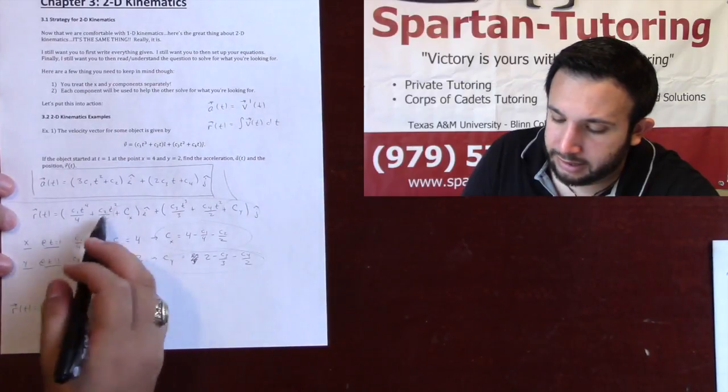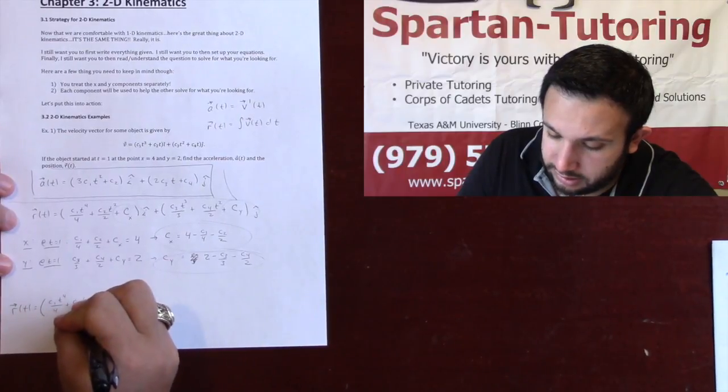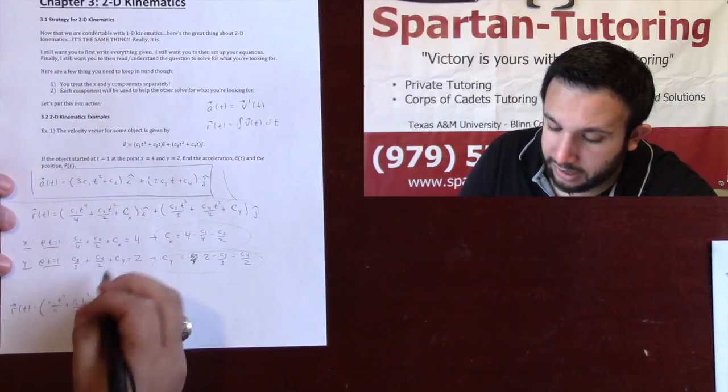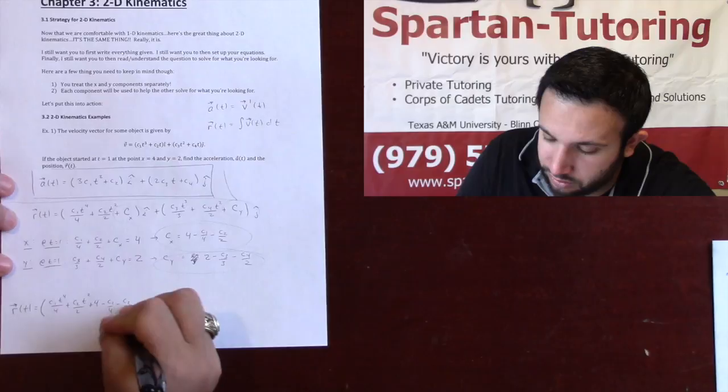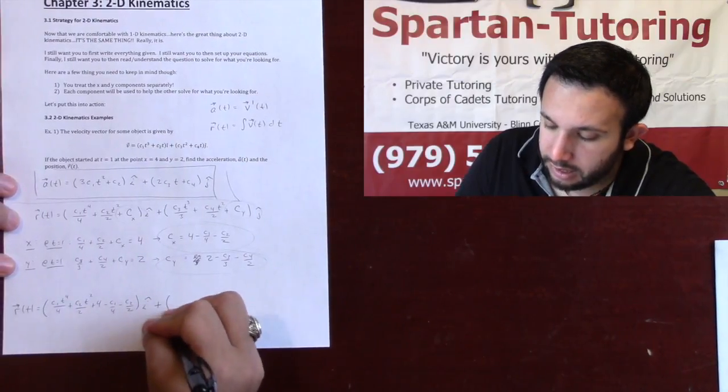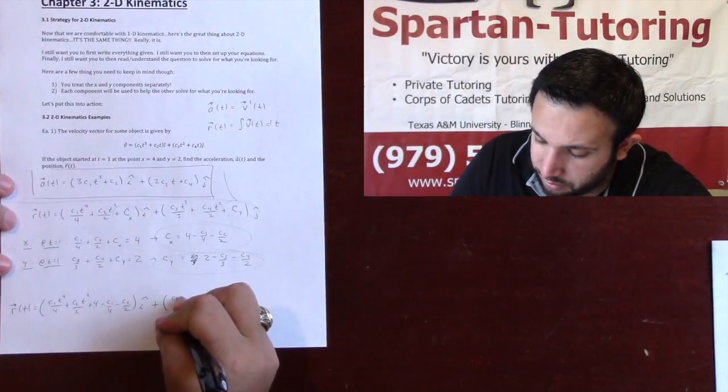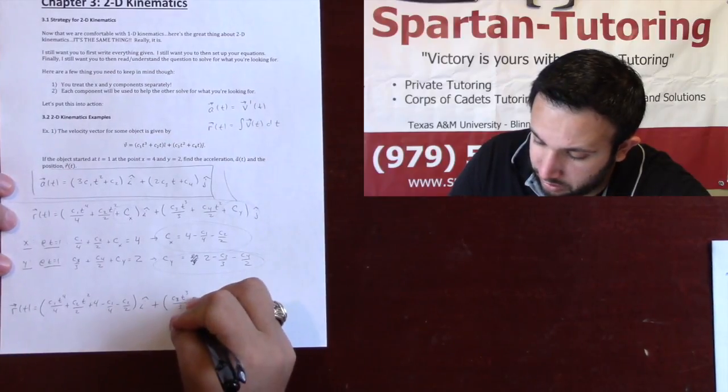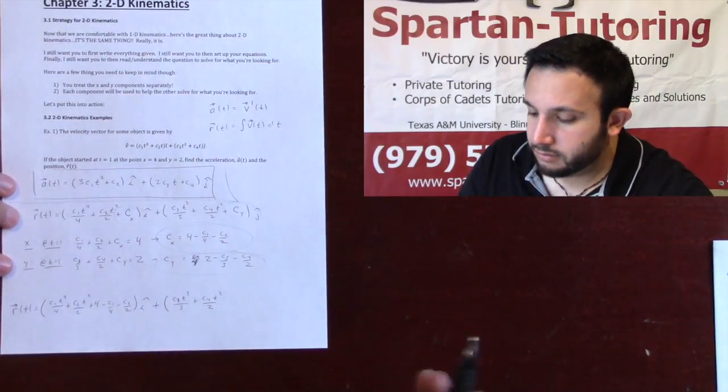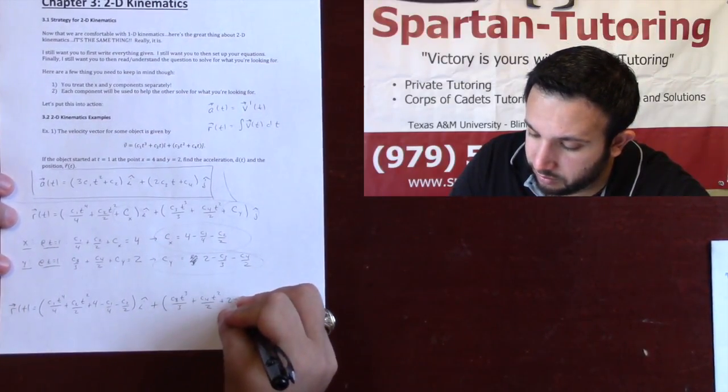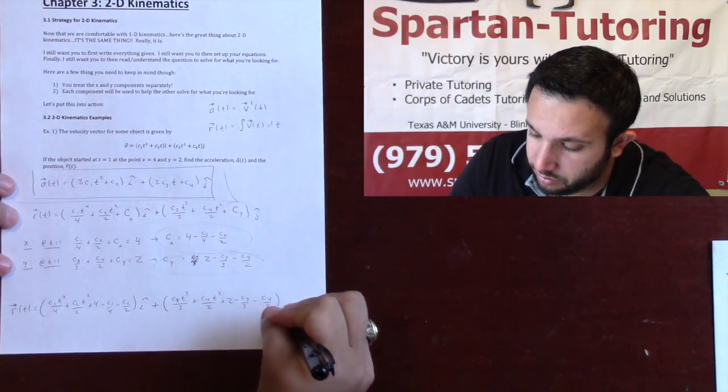In the i parenthesis we're going to have c1 t to the 4th over 4 plus c2 t squared over 2, and then my cx is plus 4 minus c1 over 4 minus c2 over 2. And then for my y component in my j parenthesis, we're going to have c3 t cubed over 3 plus c4 t squared over 2 plus my cy, but there's your cy: plus 2 minus c3 over 3 minus c4 over 2 j.